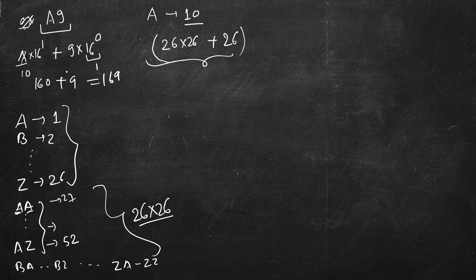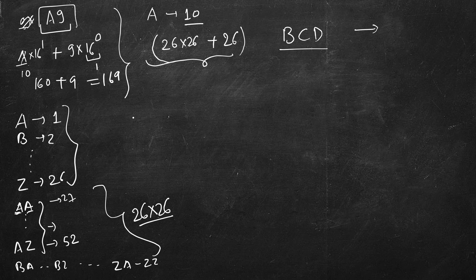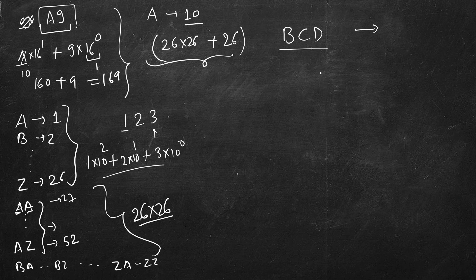Conversion should be very similar to this. Remember this picture - even in decimal if we have 123, what do we write? 3 multiplied by 10 raised to the power 0, plus 2 multiplied by 10 raised to the power 1, plus this 1 multiplied by 10 square.